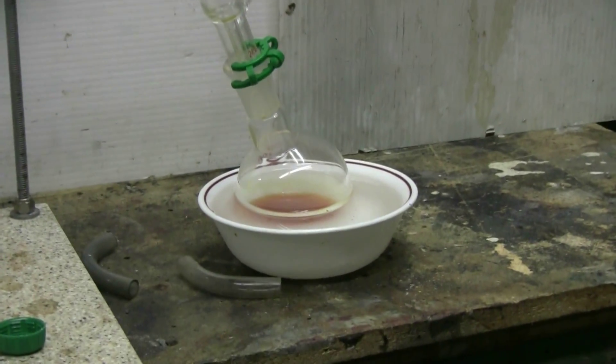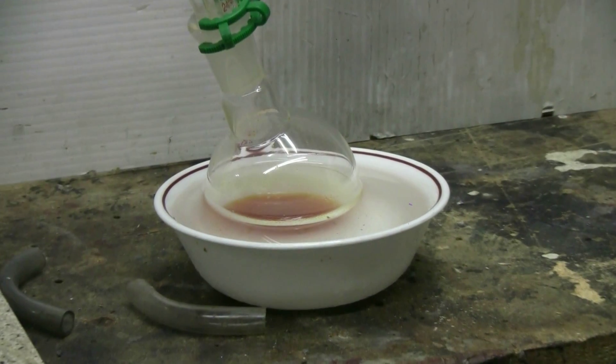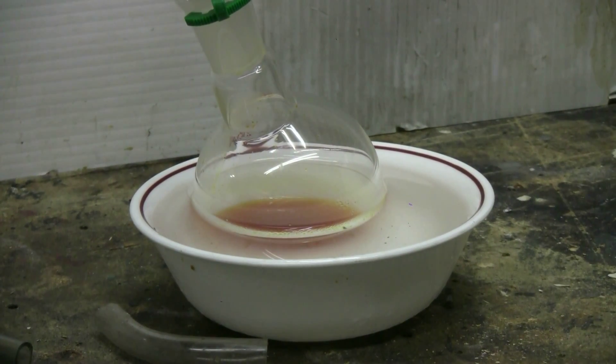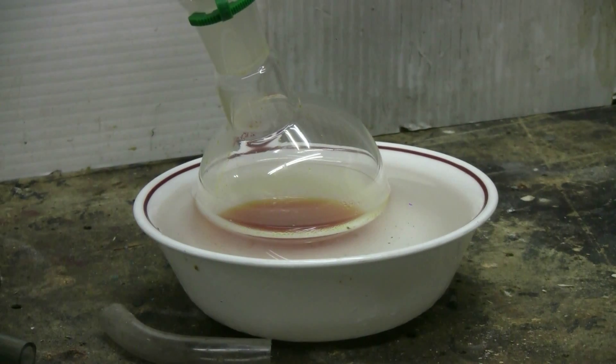Benzene of course is a water clear aromatic liquid. The liquid I've collected here is very obviously orange with impurities. What has to be done is a second step where I do a simple distillation of benzene in my glassware to purify it. I'll be doing this in my next video.